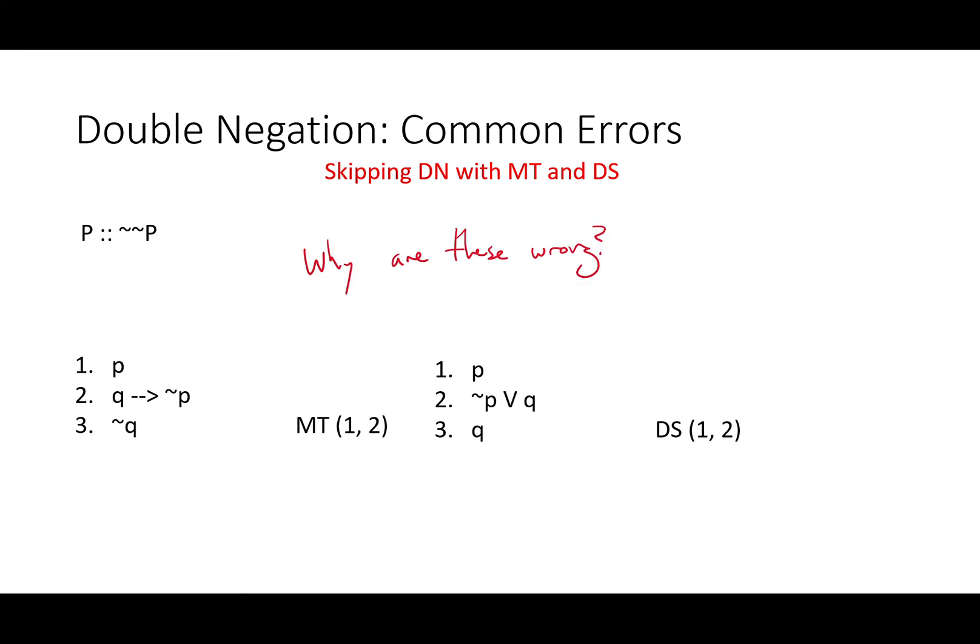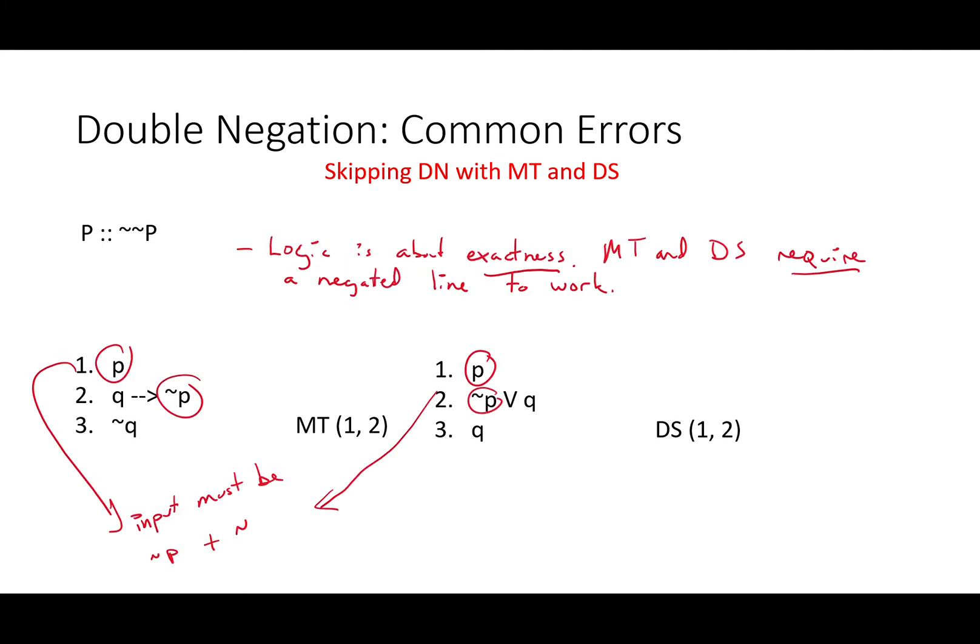Why are these wrong, since they are logically entailed? Well, logic is about exactness. Modus tollens and disjunctive syllogism require a negated line to work. That's the rules of our game. Following those rules is important.